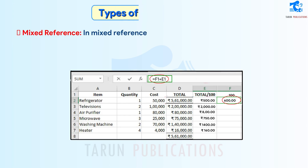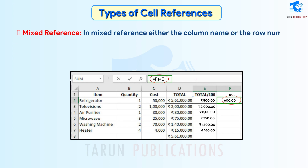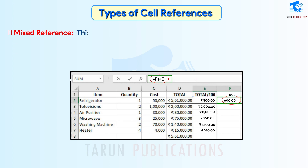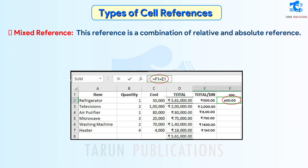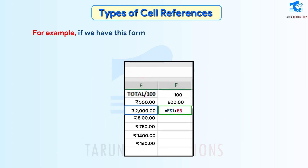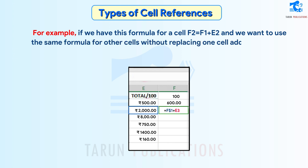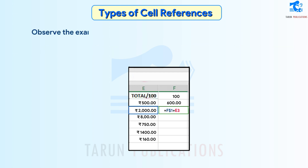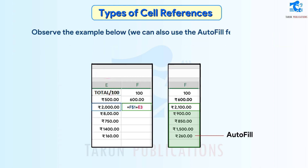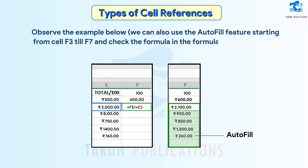Mixed Reference: In Mixed Reference, either the column name or the row number has to be fixed. This reference is a combination of relative and absolute reference. For example, if we have the formula for cell F2 = F1 + E2 and we want to use the same formula for other cells without replacing one cell address, the formula will be F3 = F1 + E3. Observe the example below. We can also use the autofill feature starting from cell F3 till F7 and check the formula in the formula bar.